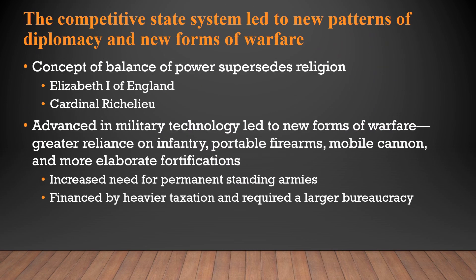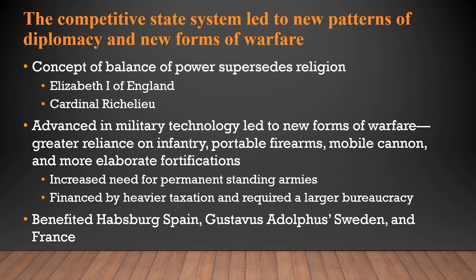Advances in military technology also led to new forms of warfare, called the military revolution. There was a greater reliance on infantry, portable firearms, mobile cannon, and more elaborate fortifications, which helped new monarchs consolidate their countries. This also led to an increased need for permanent standing armies, financed by heavier taxation and requiring a larger bureaucracy. The benefits are seen mainly in Habsburg Spain, Tudor England, France, and Gustavus Adolphus' Sweden. The new military techniques that the Swedes invented during the Thirty Years' War were later used by the English Parliament in the English Civil War, known as the New Model Army.